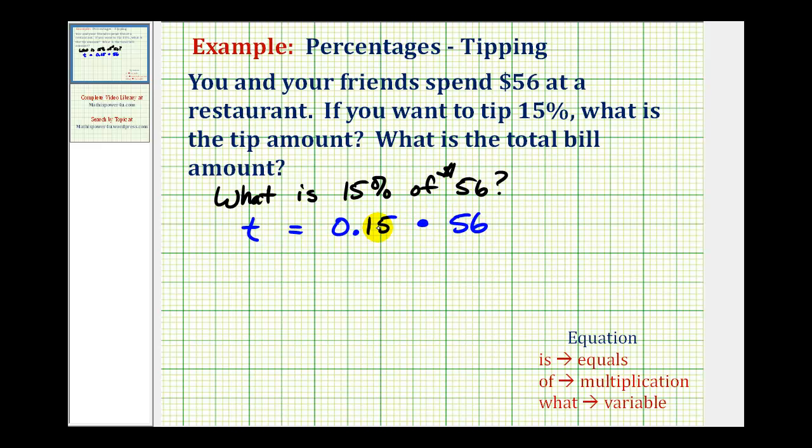So to find the tip amount, we just need to find this product. The tip equals zero point one five times fifty-six. Or we can reverse the order and write fifty-six times zero point one five. Let's do that by hand.